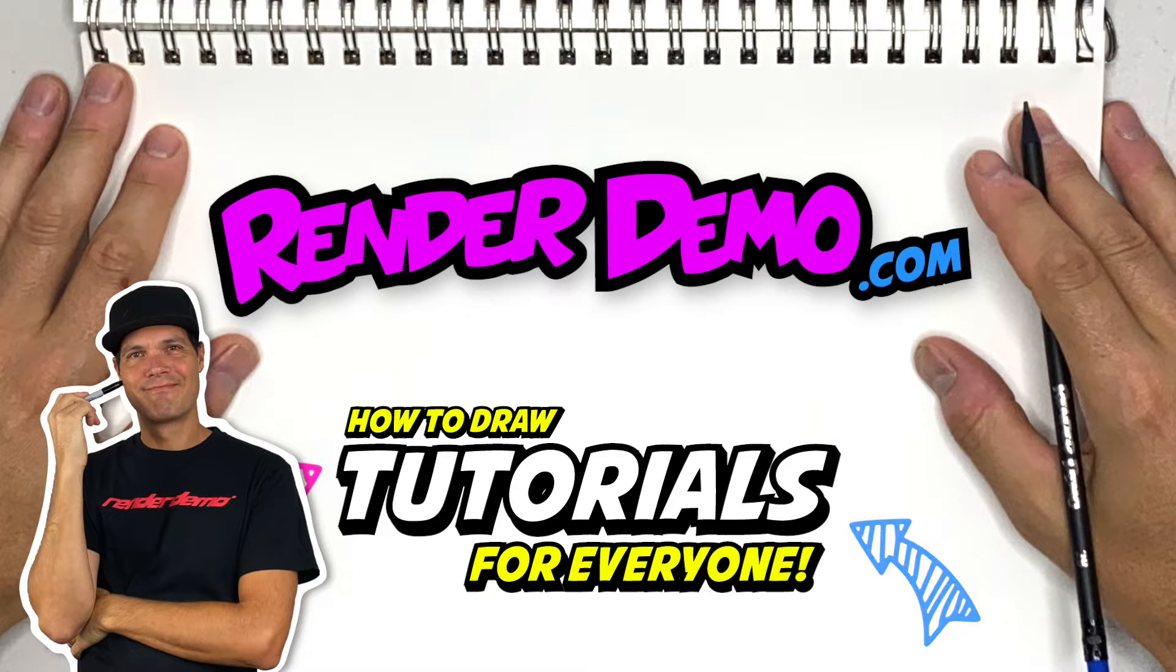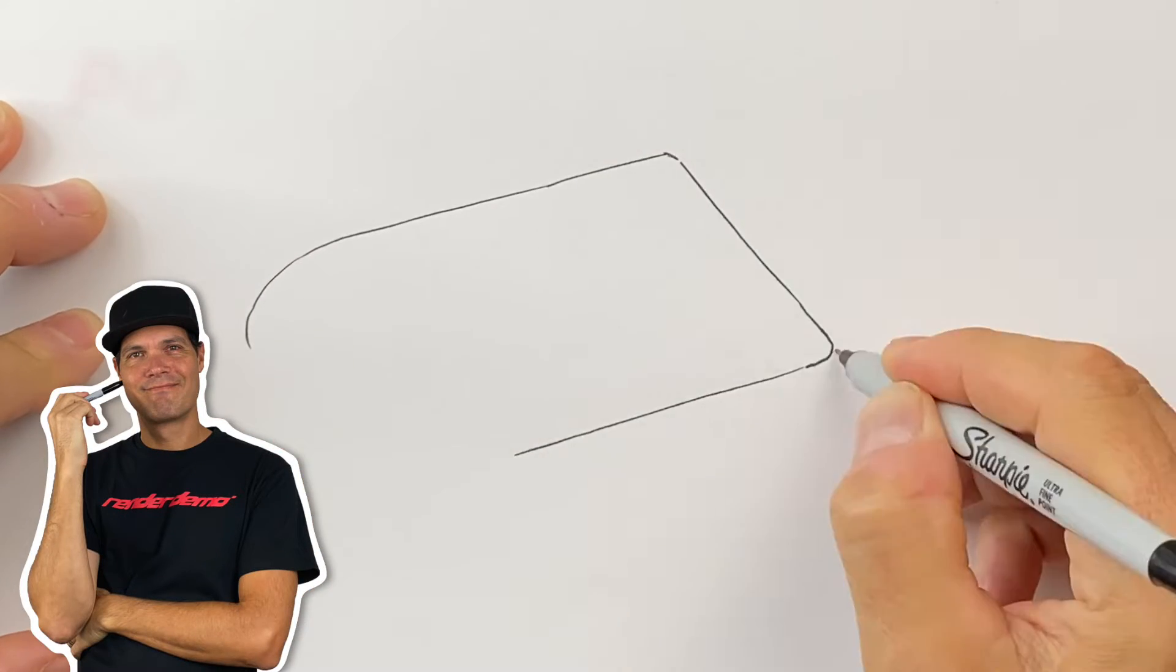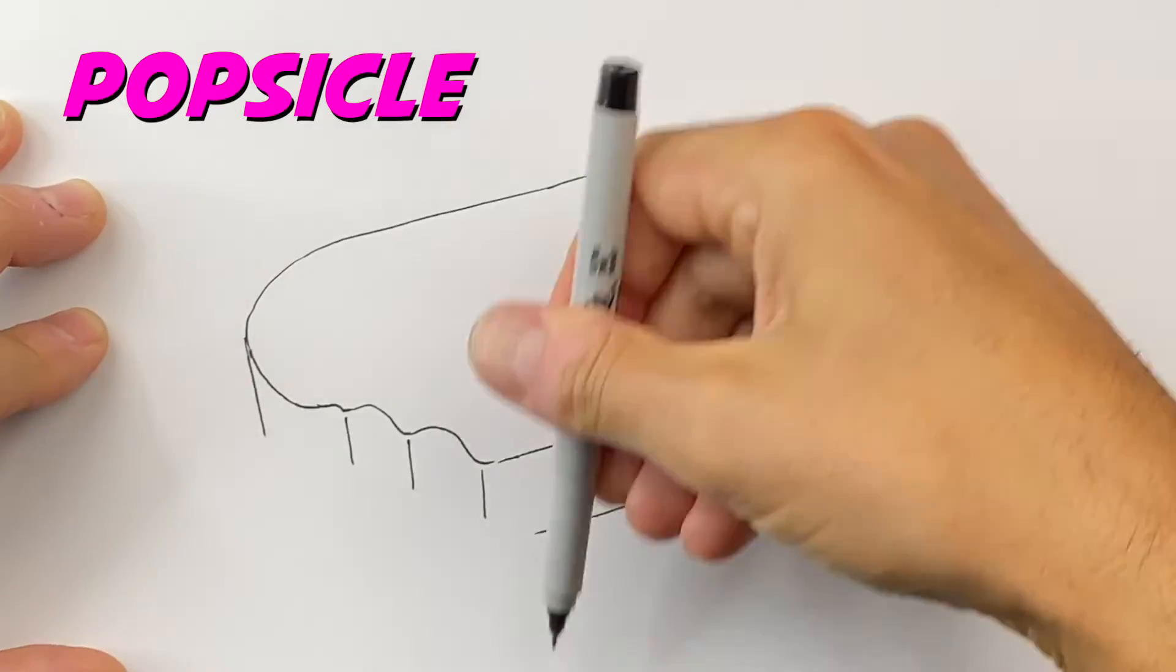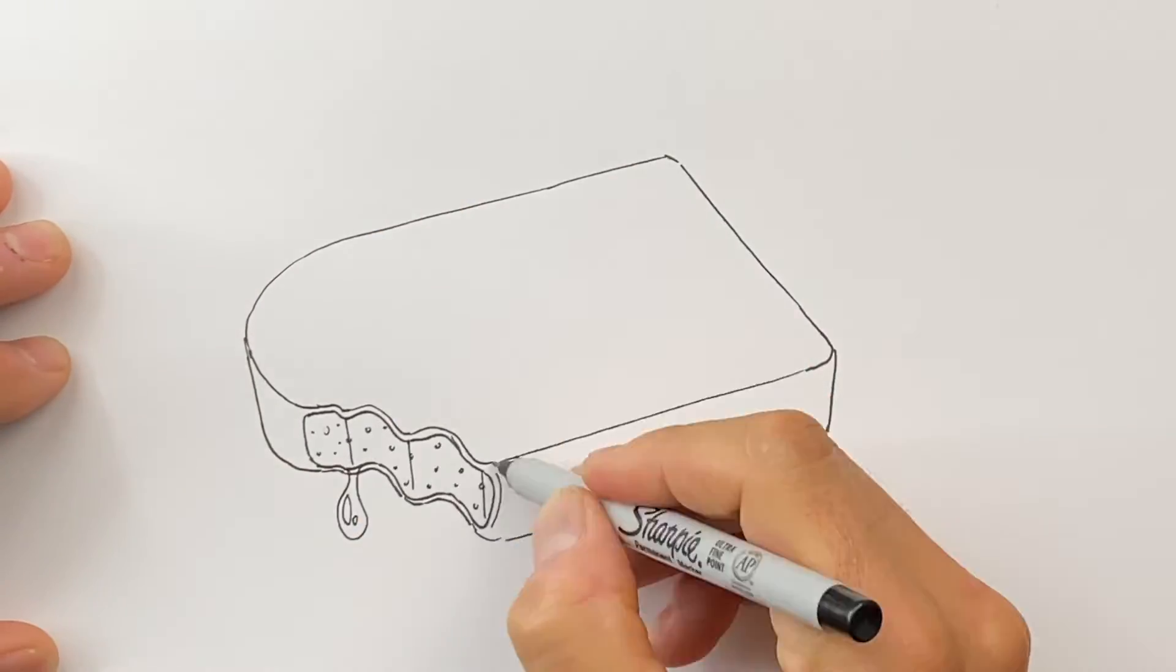Hi there, I'm Mark and I'm glad you're with me today because today I will be drawing a popsicle. So grab yourself a sheet of paper, pencil, pen, and let's begin.